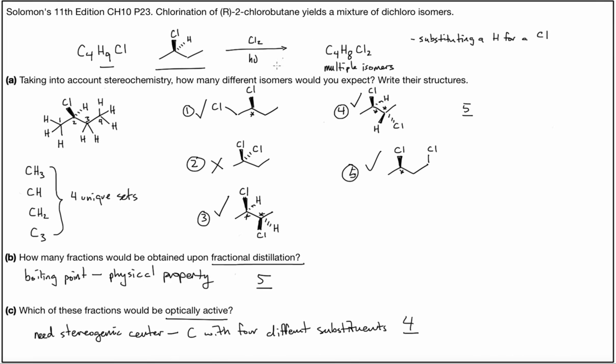To summarize, we were asked to write the number of isomers from the chlorination of R-2-chlorobutane in the presence of light. And basically what we're doing is substituting a unique hydrogen for a chlorine.